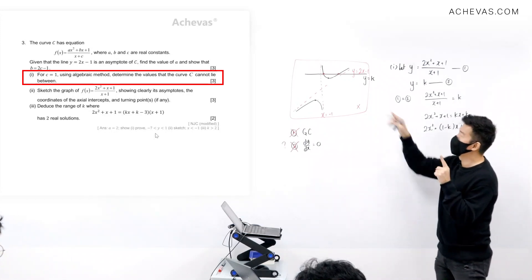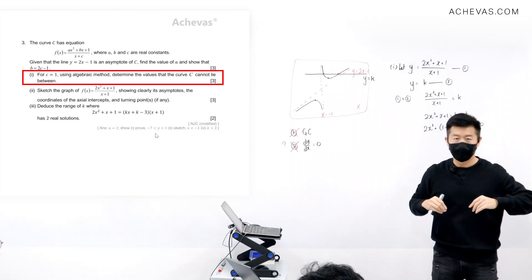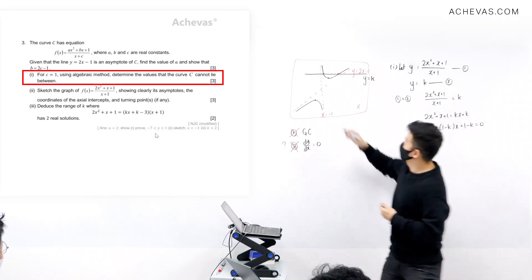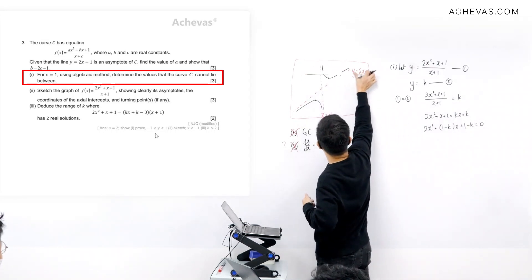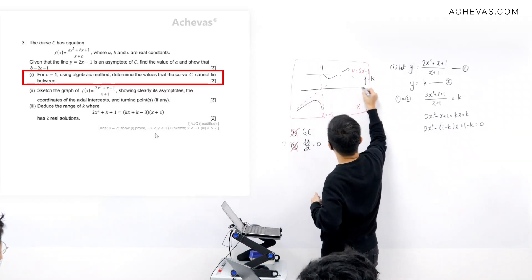Instead of having this horizontal line cutting the graph, what if I let this horizontal line be floating at a place where it will not cut the graph? That means instead of letting this horizontal line be here, what if I were to let this horizontal line be here instead?